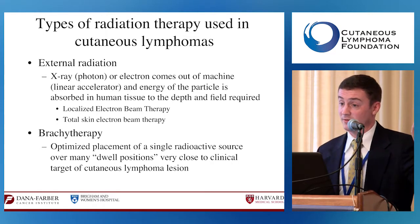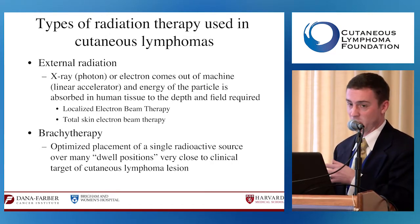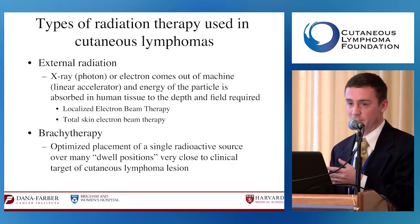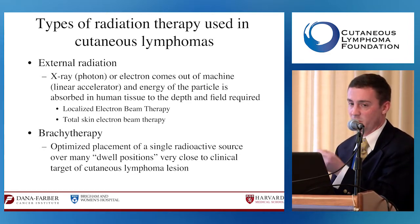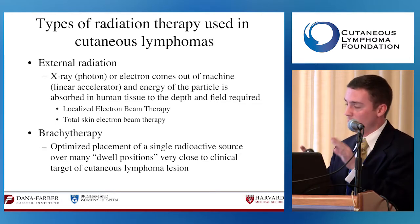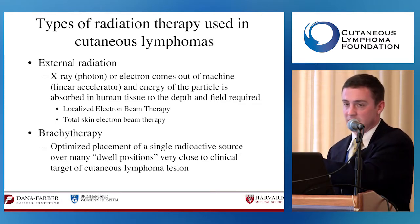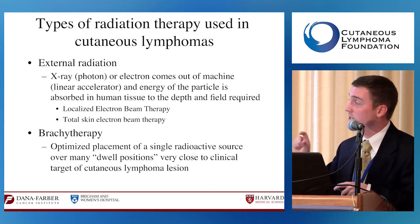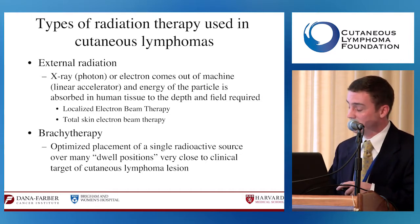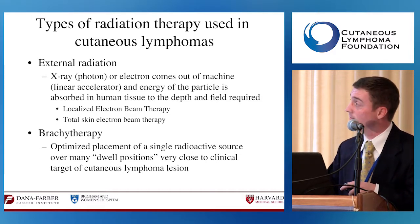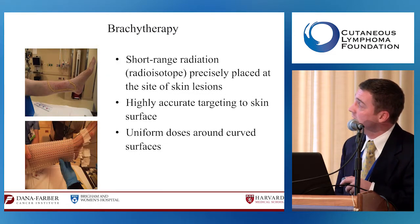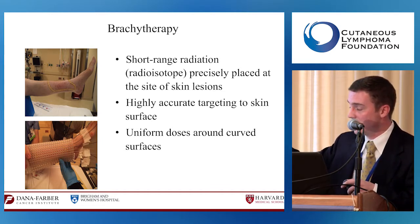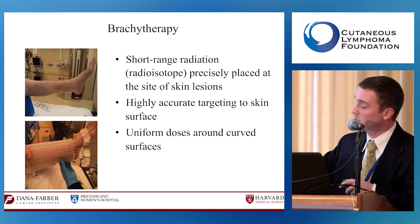Beyond linear accelerators, there is something called internal radiation—similar to radioactive pellets used in prostate cancer—where we overlay radiation directly onto the skin. This is called brachytherapy. A radioactive isotope is placed over the area of interest and treats cutaneous lymphoma similarly to how prostate cancer is treated. It is a short-range, precise radiation, and a mold can be made over curved surfaces so catheters can roll over the skin and treat complex surfaces.